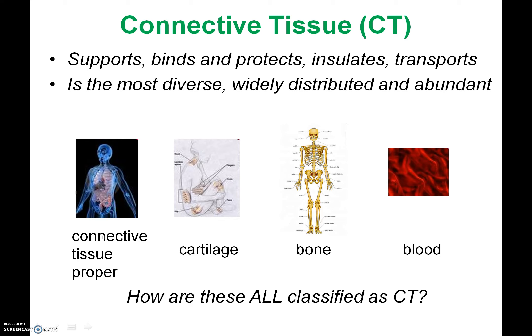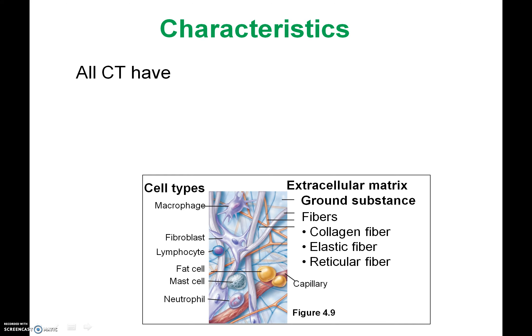So you might be thinking: how are all of these classified as connective tissue? They're so diverse, so different. Here's what you need to have to be in the connective tissue club — how do you get membership to the connective tissue category? It's actually pretty simple. You have to have, one, some cells — but just a few cells. Not like epithelial tissue where we saw them tightly packed one next to another. In connective tissue, the cells are spaced out.